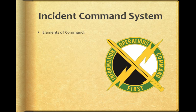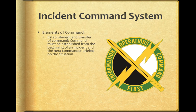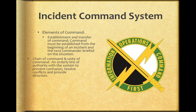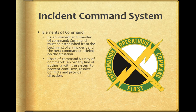Elements of the Command System include establishment and transfer of command — command must be established from the beginning of an incident and the next commander briefed on the situation. A chain of command and unity of command is an orderly line of authority within the system to prevent confusion, resolve conflicts, and provide direction.